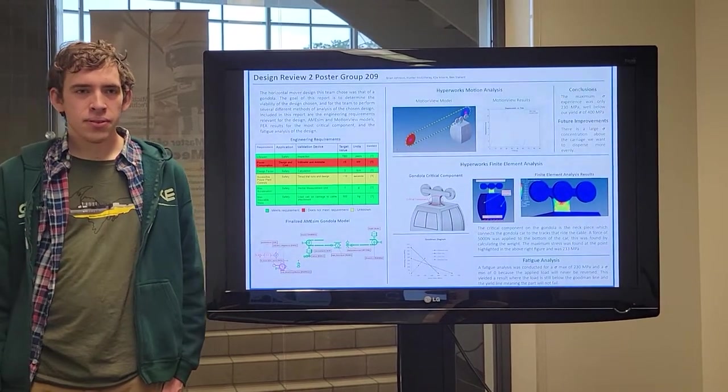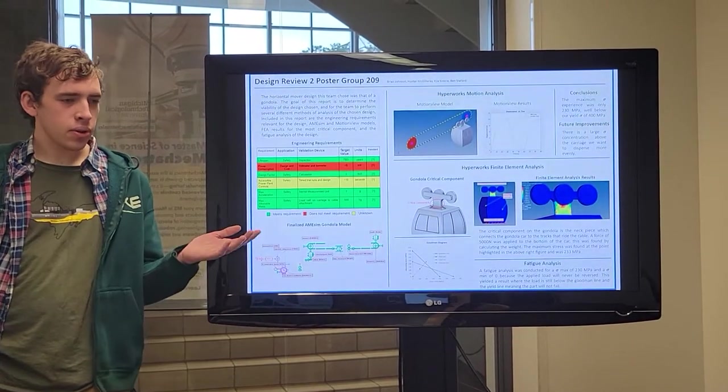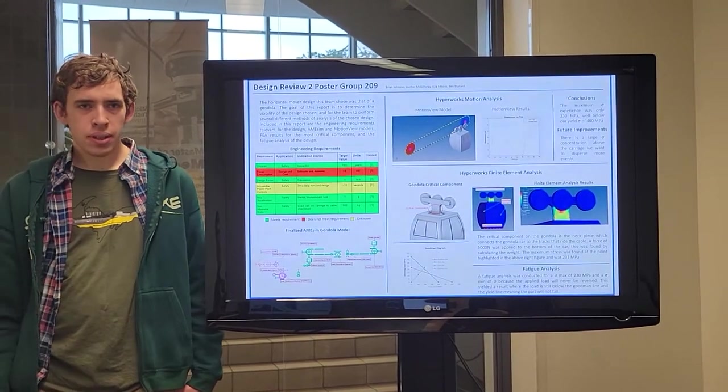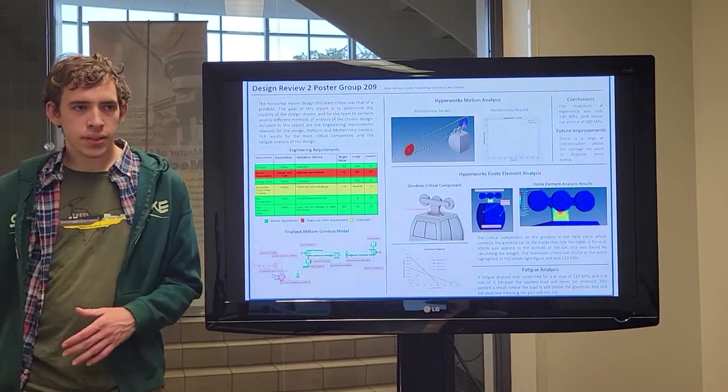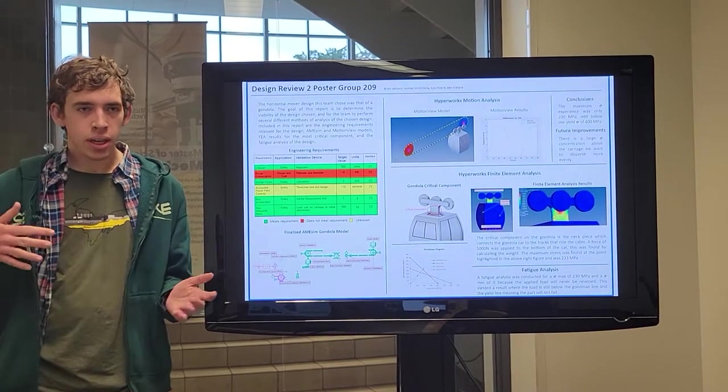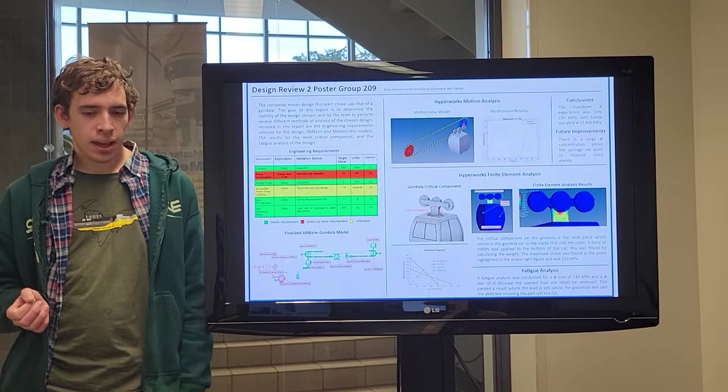This is Design Review 2 for Team 209, and this is the poster we prepared. Our horizontal mover we chose was a gondola to move people from place to place, possibly across the valley, connecting towns and similar types of orientations.